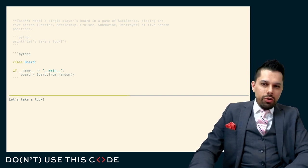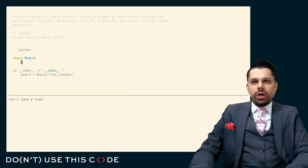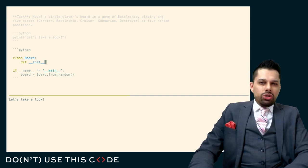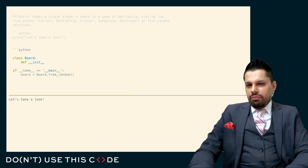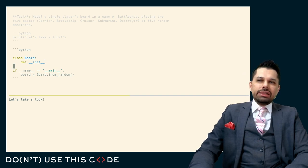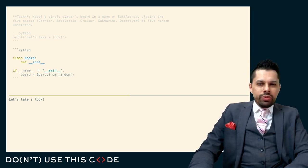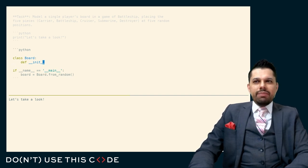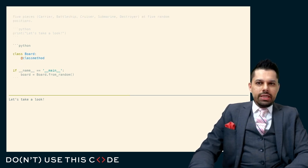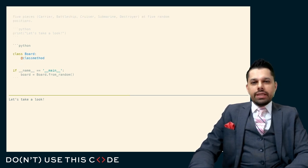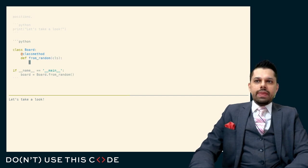One thing we know about object orientation is that any time we're implementing something like an __init__, we're looking for the unique, privileged, unambiguous meaning for that particular operation. Here, there may be multiple different ways to implement this board, so it's probably a bad idea to put that logic into the __init__. It's a better idea to use a class method — we'll have a class method that gives us our random board.